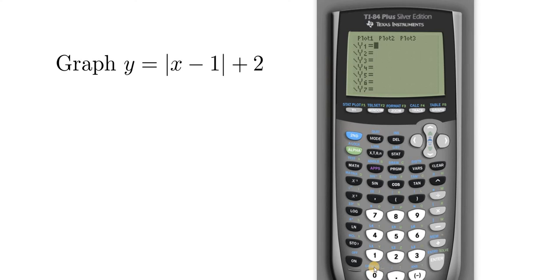In order to press blue keys you first have to press second. So press second, zero. And there it is, there's the first one, ABS. That's absolute value. Just click enter and you get the absolute value bars.